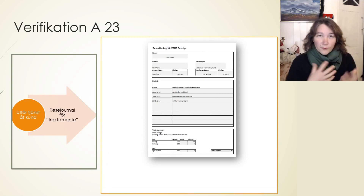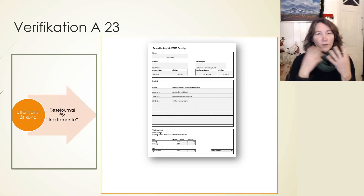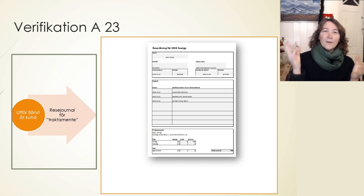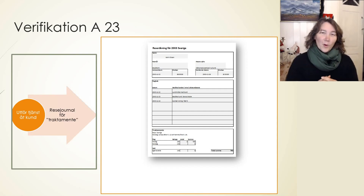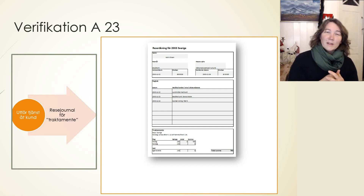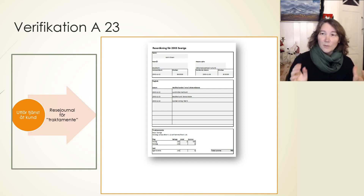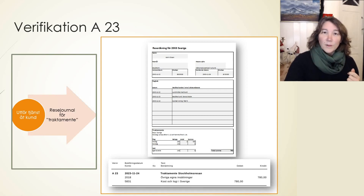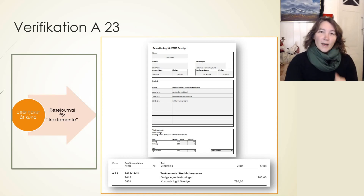Then you go and perform the service, and you write this travel journal so you can get a traktamente. Traktamente is when you are away from home — you are allowed to get a tax-free deduction for being away from home, and there are some different rules for you to be able to get that. If you are running a limited company, this is called traktamente. But if you are running a sole trader, this is called ökade levnadskostnader instead. So in my example, you have a sole trader, so you will book it as ökade levnadskostnader.